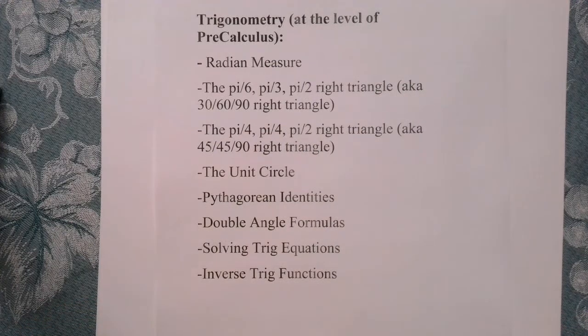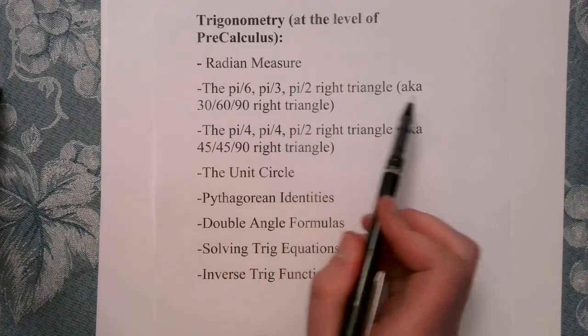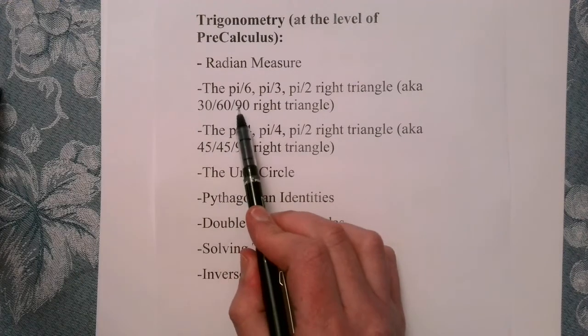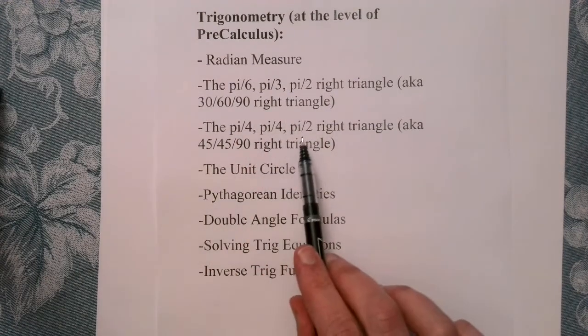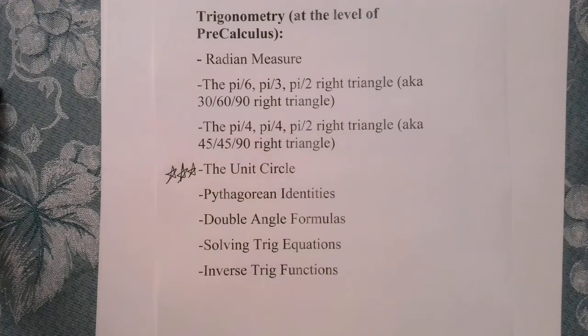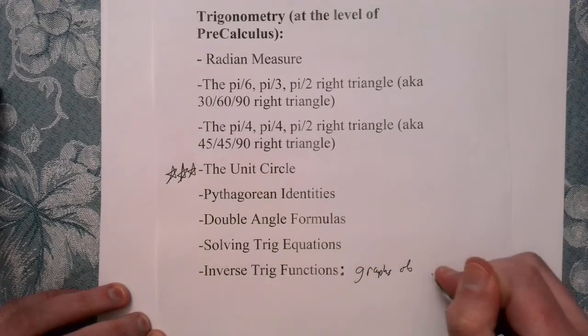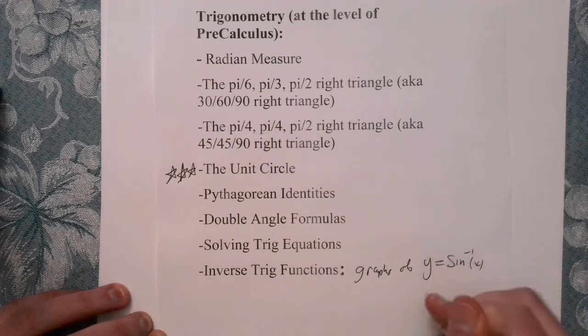Next, let's talk trigonometry at the level of pre-calculus. You need to be very comfortable with radian measure. You should know the pi over 6, pi over 3, pi over 2 right triangle — sometimes referred to in degrees as the 30-60-90 right triangle. You should also know the pi over 4, pi over 4, pi over 2 right triangle. The unit circle — I can't stress this enough. Pythagorean identities, double angle formulas, how to solve trig equations, and you should know how to deal with inverse trig functions. You should know the graphs of at least arcsine and arctan.